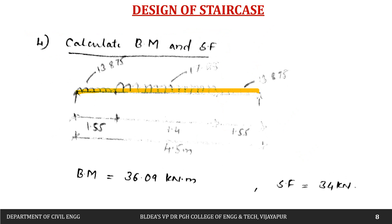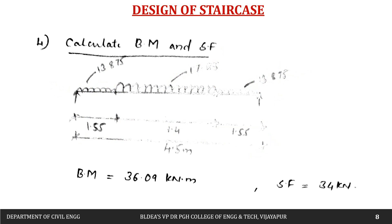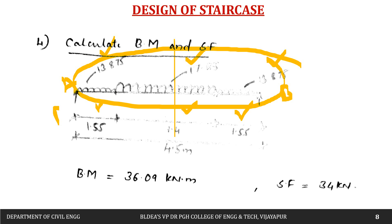The loading diagram shows 13.875 kN/m on both landings and 17.85 kN/m on the going. The span lengths are 1.55 m, 1.4 m, and 1.55 m, totaling 4.5 m. Since the loading is symmetric, the support reactions RA and RB are equal, calculated as: (13.875 × 1.55 + 17.85 × 1.4 + 13.875 × 1.55) / 2.